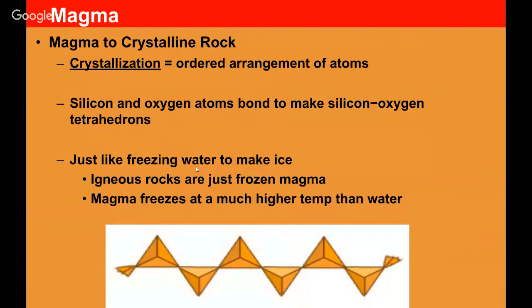In order for magma to go from liquid hot magma to an igneous rock, you need this process known as crystallization. That's where the atoms in the magma start to get into an ordered arrangement and start to bond.